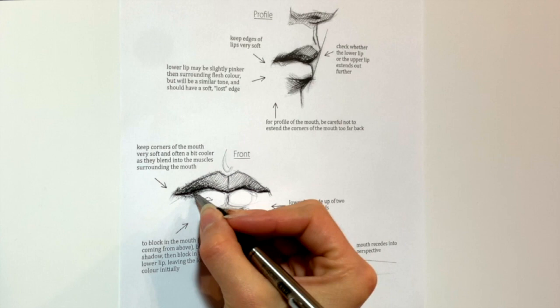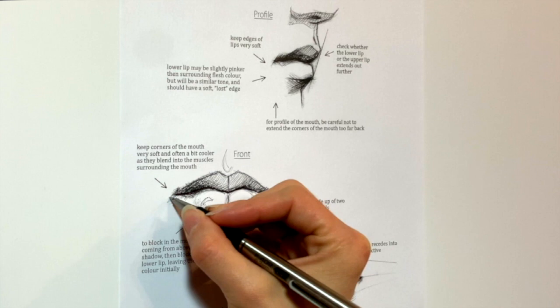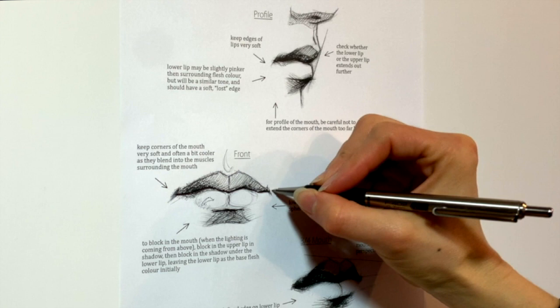The corners of the mouth will fade out to a soft edge. Maybe a little bit cooler if you're working with color, sort of muscle tuck at the corners of the lip.